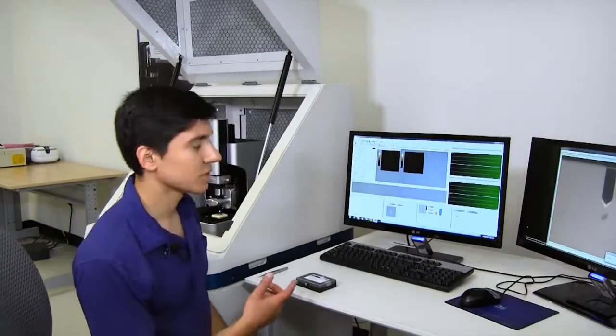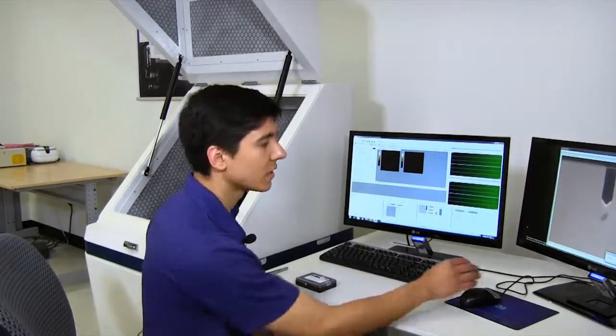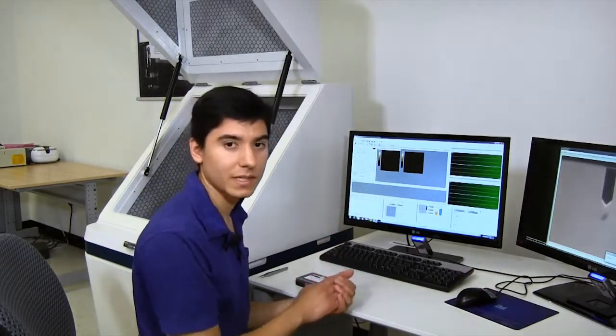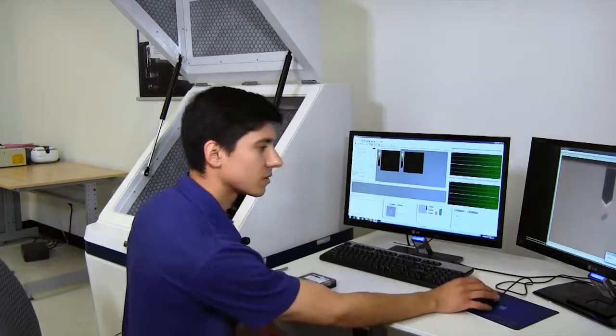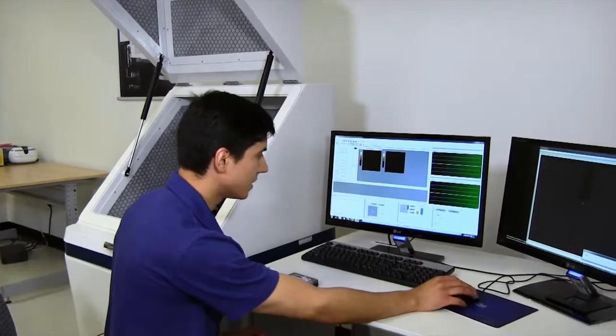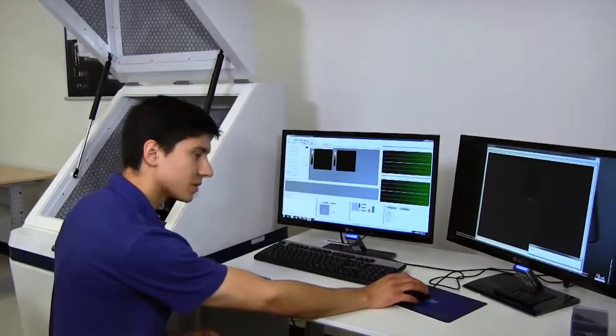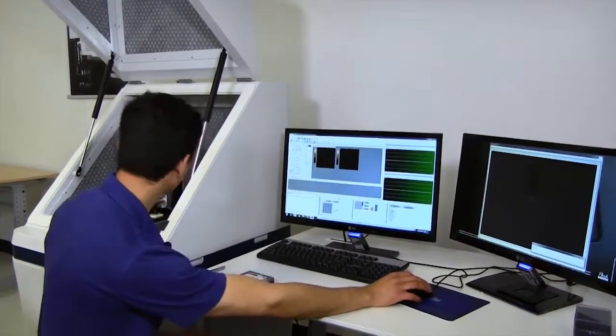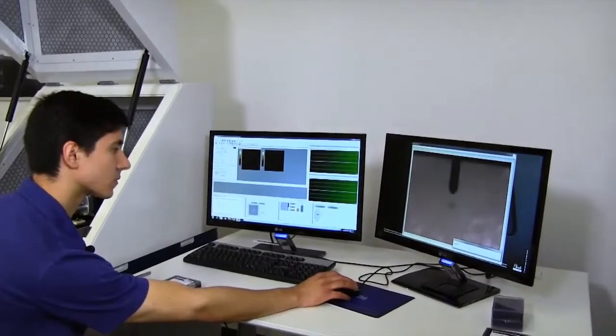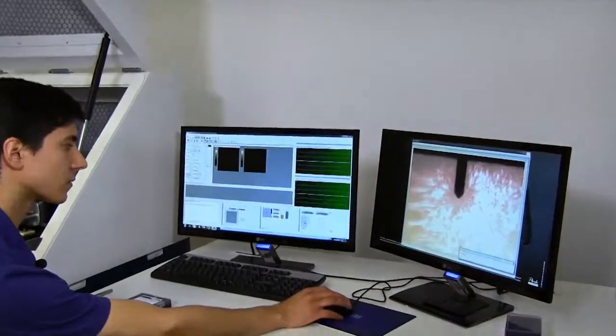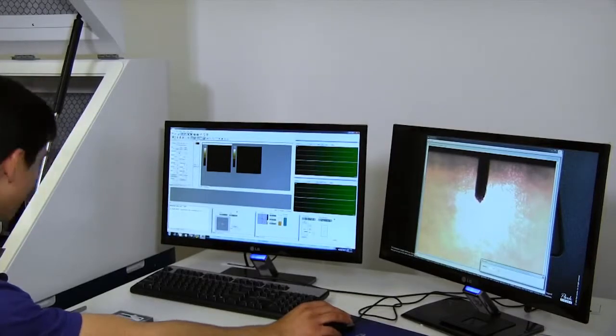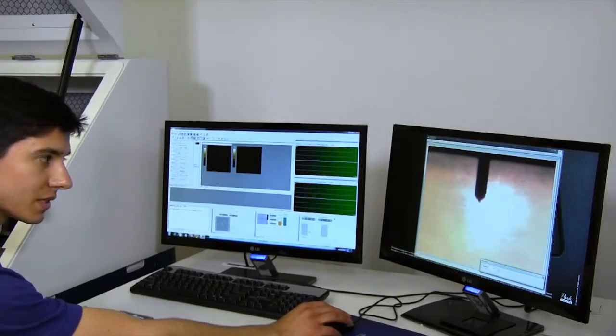Now I'm going to use the motorized controls in the data acquisition software to adjust where on the sample the probe is going to be scanning when we take an AFM image. So let me adjust the light source to the optical microscope and then move the probe closer to the sample. So now the probe is getting pretty close to the sample, so now I can pan the sample around and find a good place to scan.